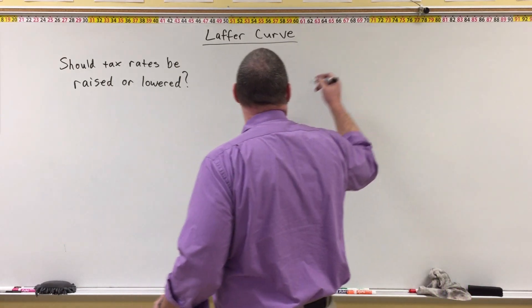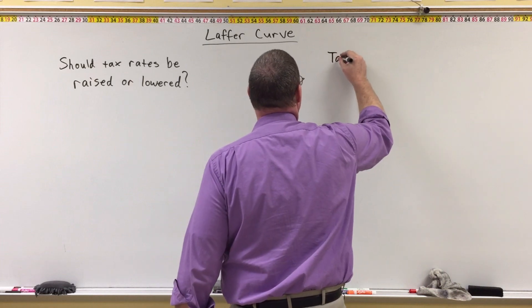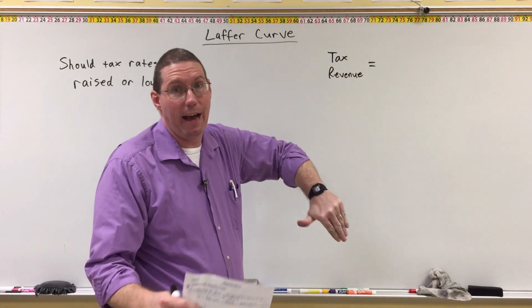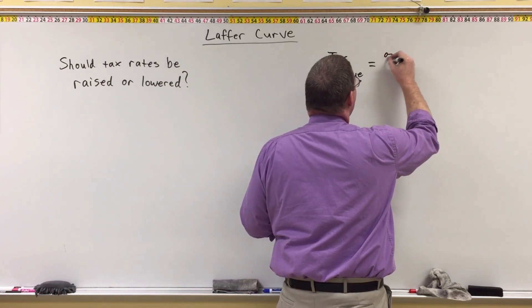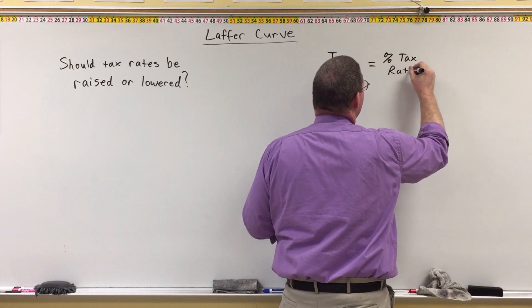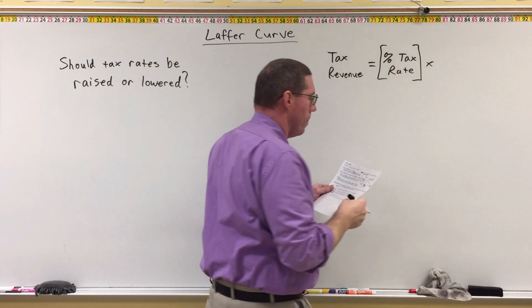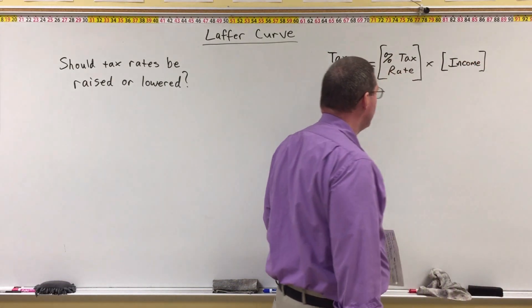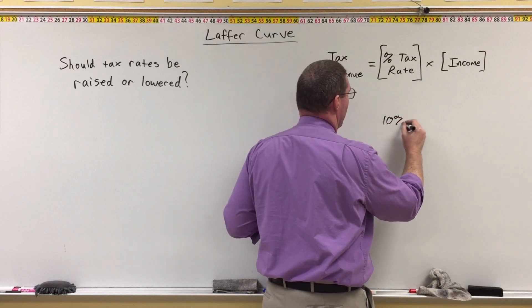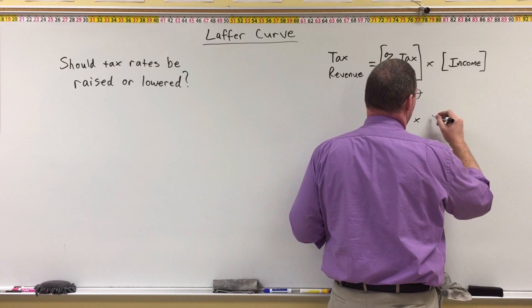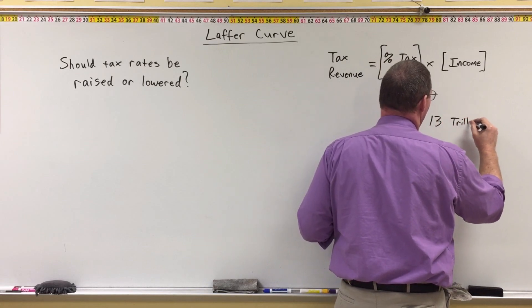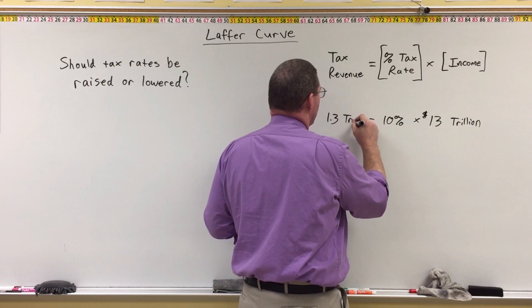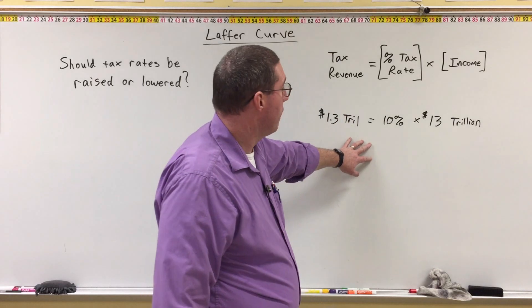The first thing we need to understand is a basic algebraic formula. The tax revenue received by the government — how much money the government gets in taxes — is equal to the percentage tax rate times the overall income of everybody in the economy. To make this simple, let's say the tax rate is 10% and income in the economy is $13 trillion. Therefore, the government will collect $1.3 trillion in tax revenue. Very simple idea.